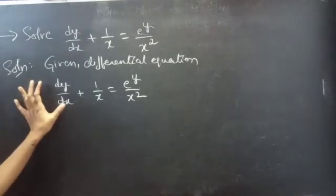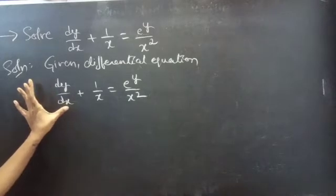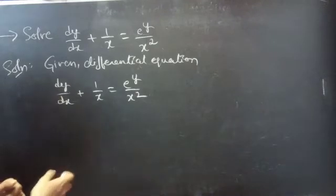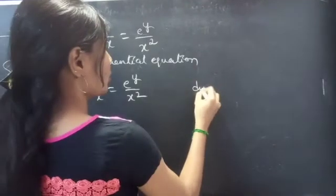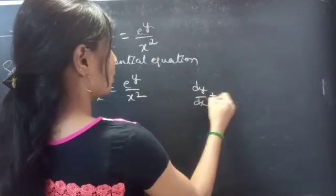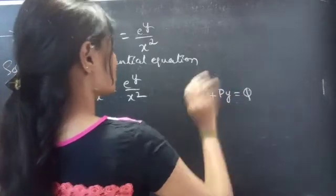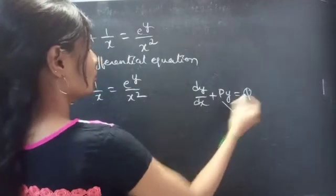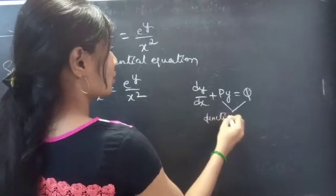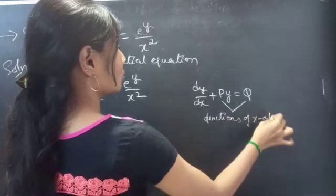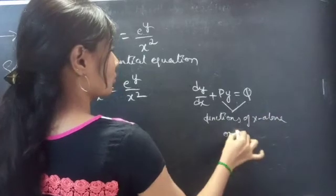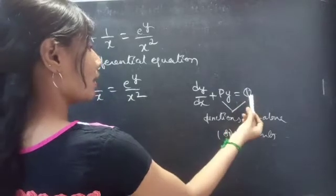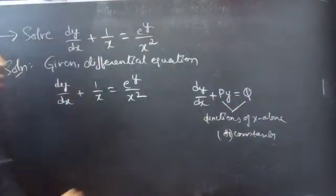What we will do is, we will simply reduce this equation to linear form by making some simple substitution. If you notice the standard form of linear equation in y, in the RHS part, P and Q are either functions of x alone or constants — but not a function of y.